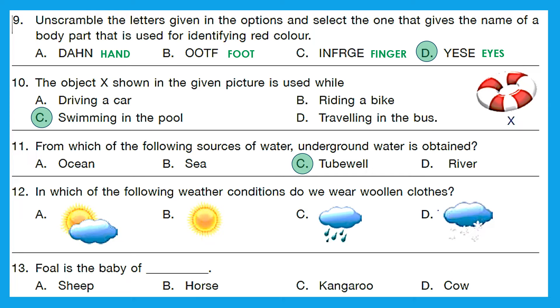Question 12. In which of the following weather conditions do we wear woolen clothes? So do you know when do we wear woolen clothes? We wear woolen clothes in winters on a cold day. Now here A shows it is partially cloudy, B shows it's sunny, C shows it's rainy and D shows it's winter. Because snowfall is happening, option D is the right answer. Question 13. Foal is the baby of horse. Of course, option B is the right answer.